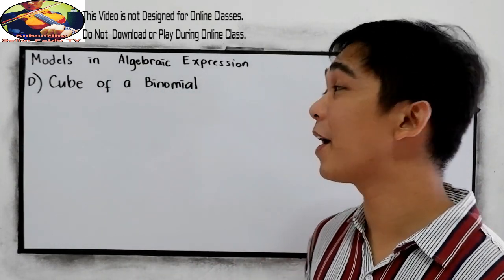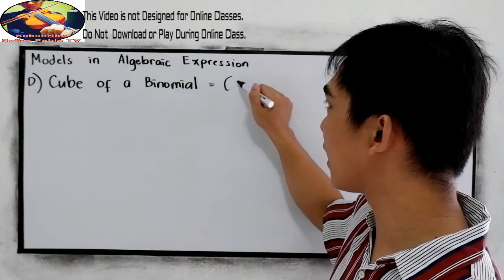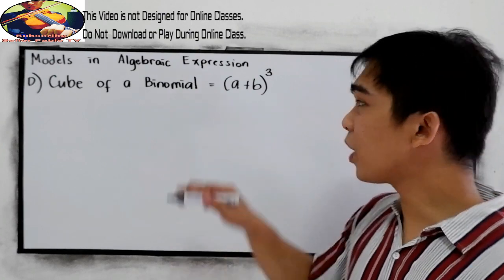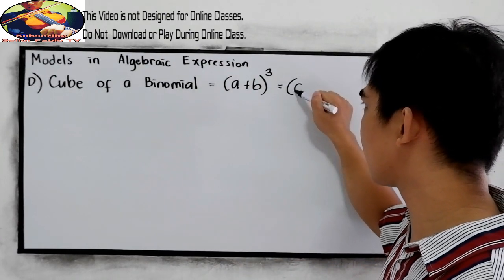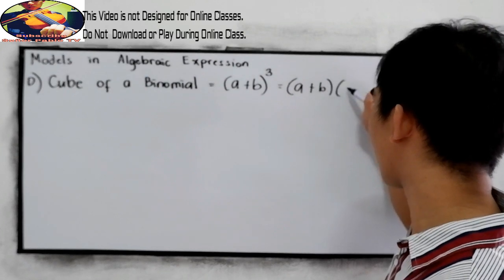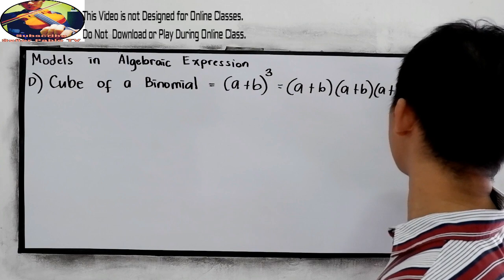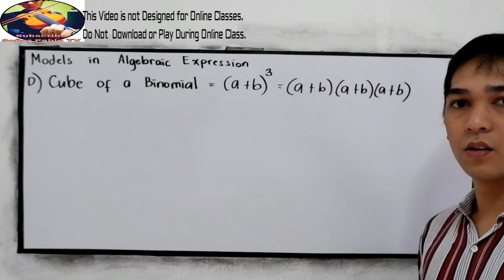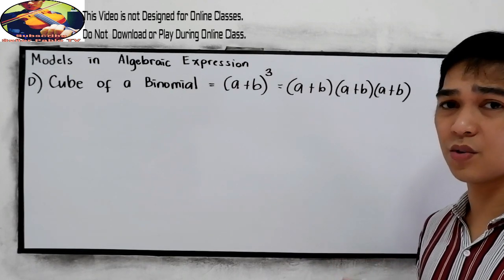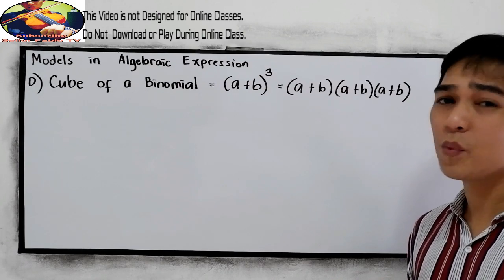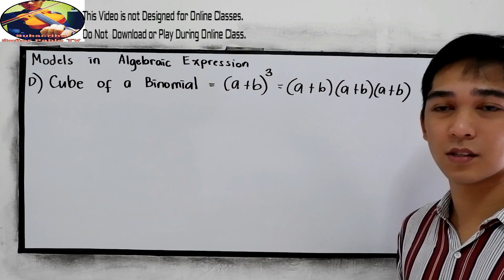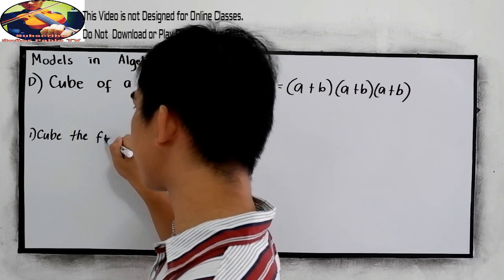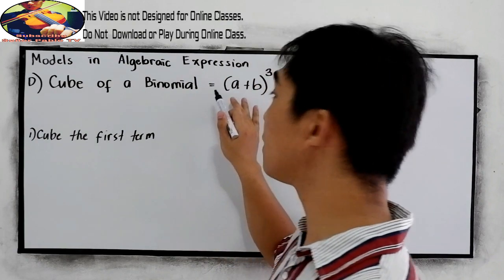Notice our topic: cube of a binomial. Let's say we have a binomial, a plus b, and we're going to get the cube. If we expand this, the equivalent is a plus b, times a plus b, times a plus b. We can get the product using the FOIL method, or we can simply use the following steps. Step number one: cube the first term of the binomial.